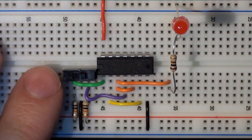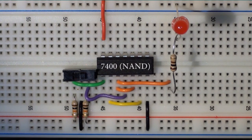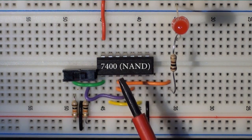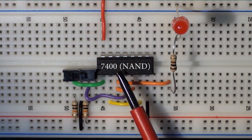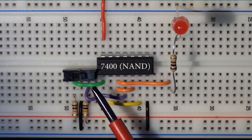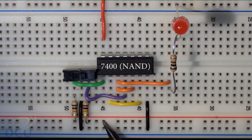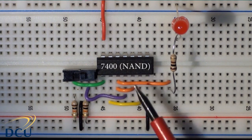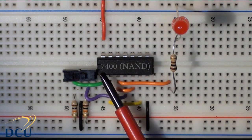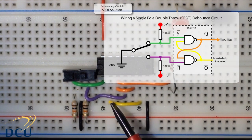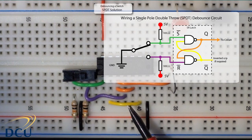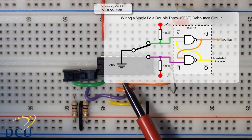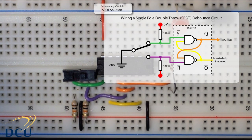This is the circuit I've built to debounce the single pole double throw switch. Here is my switch and here is my logic gate — this is a 7400, a quad two-input NAND gate. Both poles of the switch are connected via pull-up resistors to plus five volts. One side of the switch runs into the input of the first NAND gate. The second side via the purple wire runs as an input into the second NAND gate. The output of the second NAND gate feeds into the second input of the first NAND gate, and the output of the first NAND gate is our circuit output as well as feeding into the input of the second NAND gate.